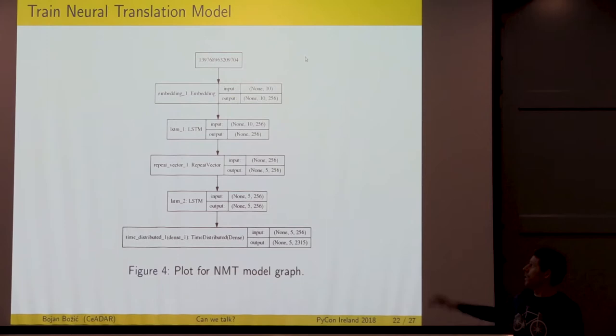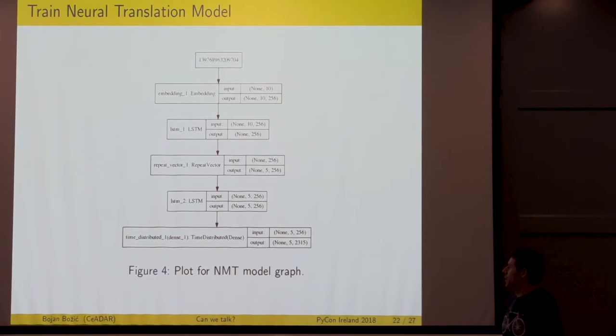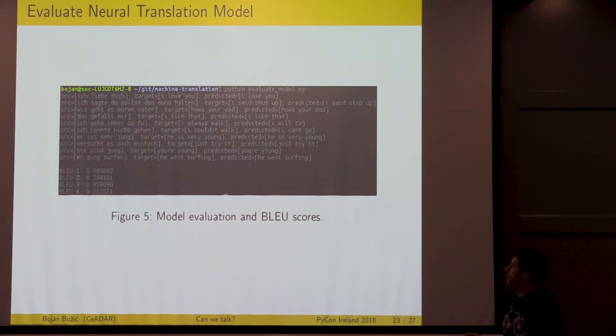This is the generated neural network. We can see there is the standard embedding layer we always use to start. There is the long short term memory layer, repeat vector, a second long short term memory layer, and then time distributed dense function that prepares the outputs for us to have a look at it.